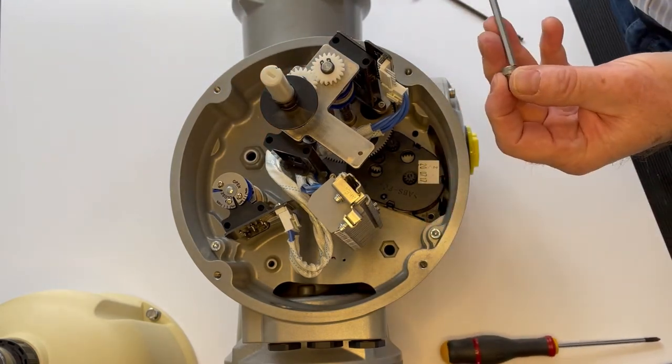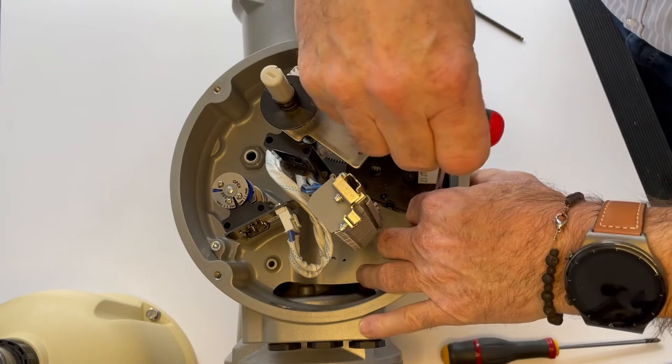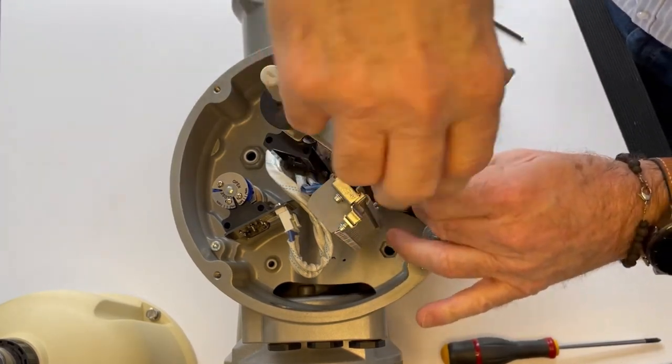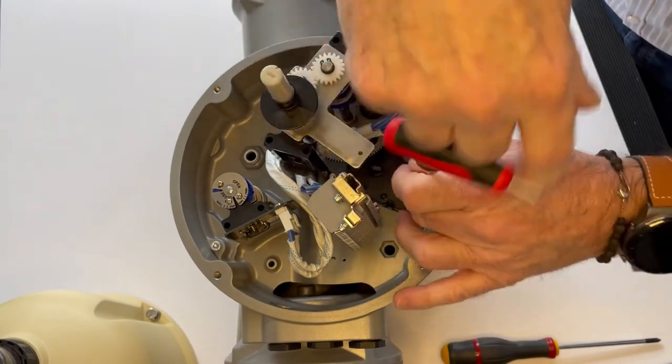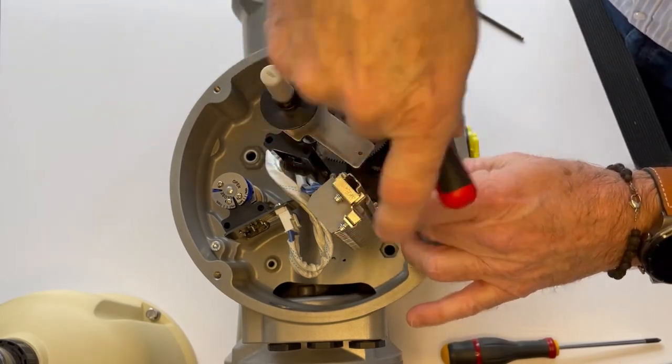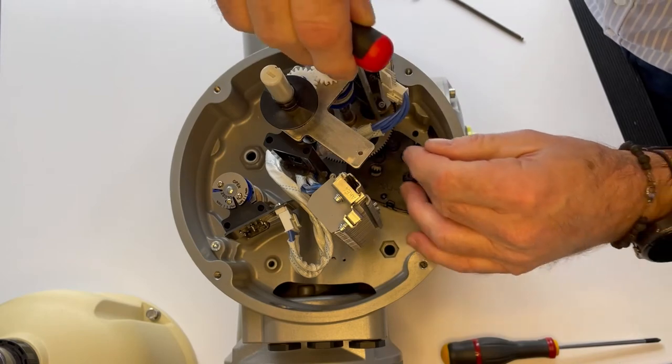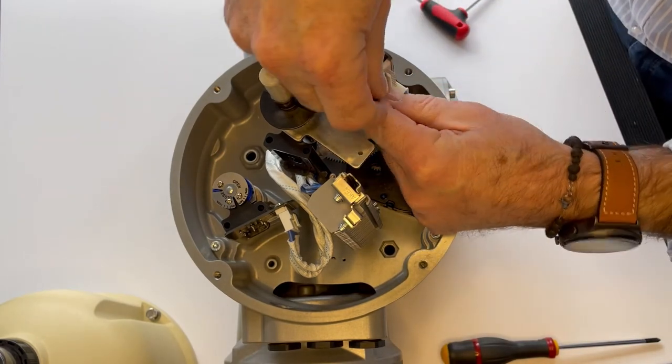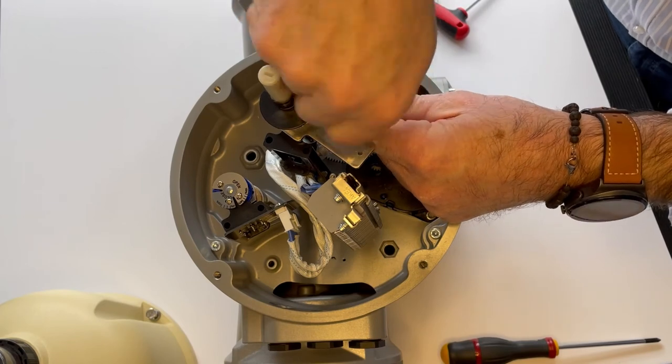Once that is done, place the other screw and fully tighten it. Finish tightening the screw under the gear.